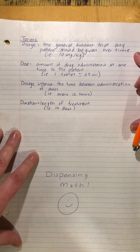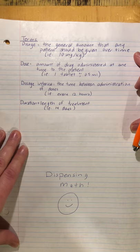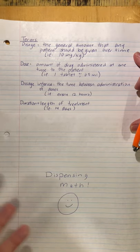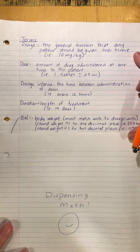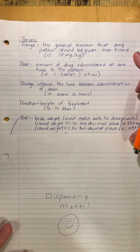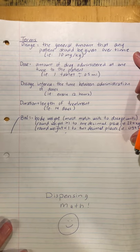Our next term is the duration. The duration is the length of the treatment — for example, treating the animal for 14 days, which is a pretty standard length of treatment.